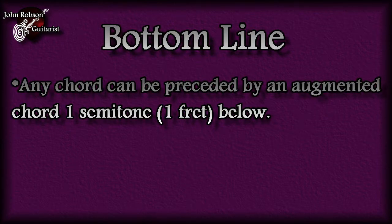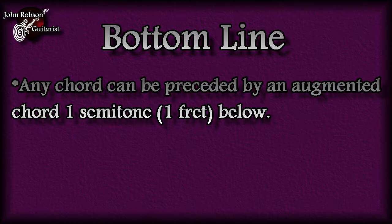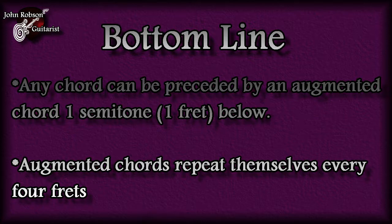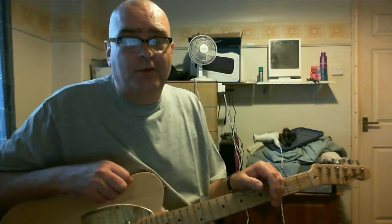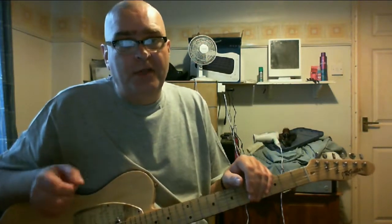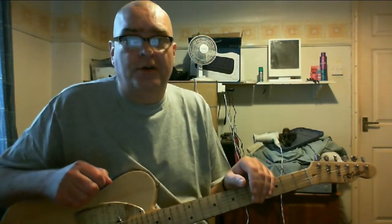Don't worry if some of this has flown by a little bit too fast. All you've got to take away from this is the bottom line: you can approach any chord, major or minor, via an augmented chord one semitone below, and augmented chord shapes will repeat themselves every four frets. That's augmented chords — what they are and how they work. But there is another type of signpost chord we can use, and that is the diminished seventh.